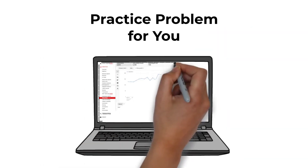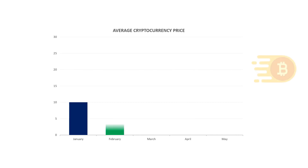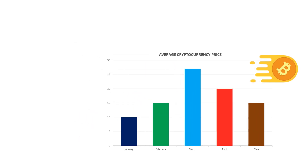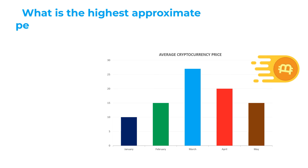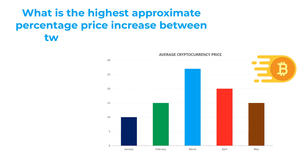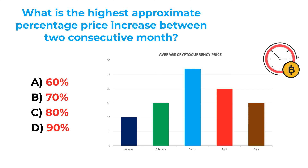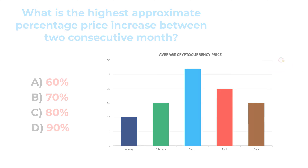Here's a practice problem for you. You're presented with a chart showing the average price of cryptocurrency for each month from January to May. You need to calculate what is the highest approximate percentage price increase between two consecutive months. The four choices are: A) 60%, B) 70%, C) 80%, and D) 90%. If you know the answer, please post it in the comment section.